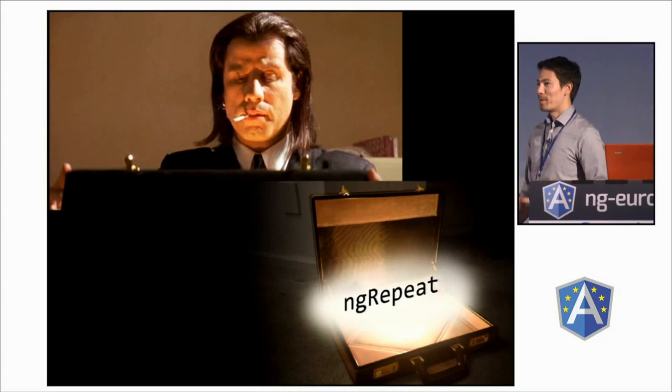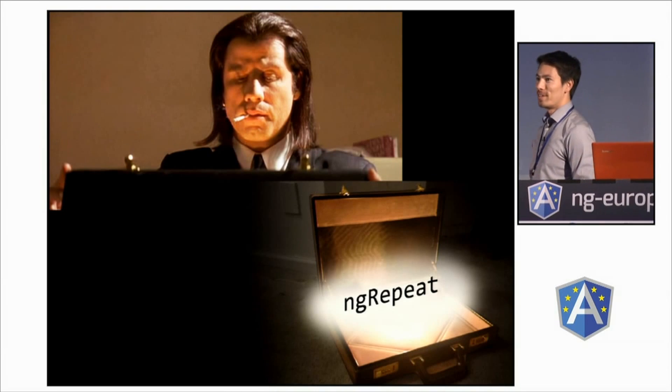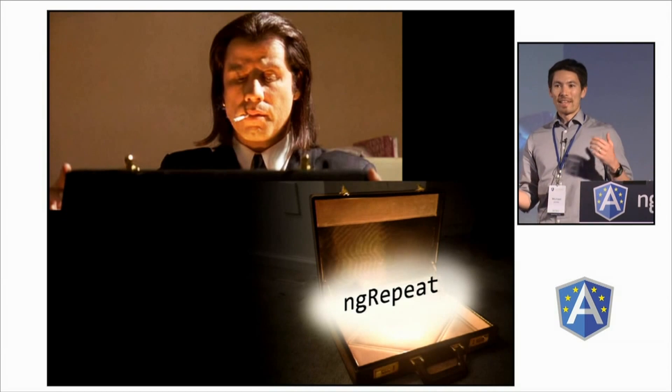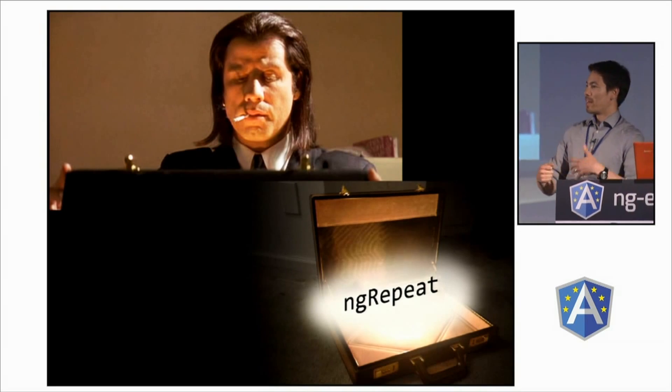As you all know, ng-repeat is the thing that drives any kind of list or table of data in your Angular app. It gives you this expression which you can use to filter, to sort, to otherwise transform the collection in a number of ways — it's super powerful. Now, imagine if you could harness the power of ng-repeat and have it automatically paginate itself and generate pagination links on the fly, which update themselves as the collection changes with filters and so on — all without having to write a single line of code in your controller.